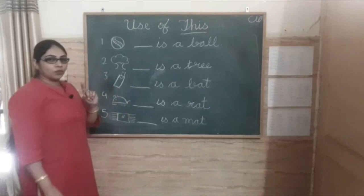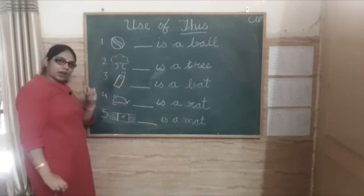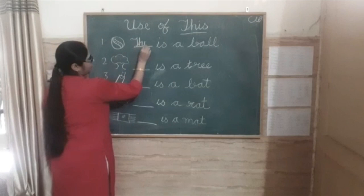For example, what is this? This is a ball, and the ball is only one. So we can write: This is a ball.